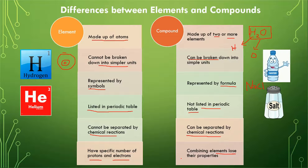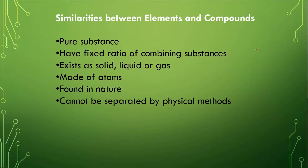In the case of compounds, the combining elements lose their individual chemical properties. For example, hydrogen and oxygen are both gases, but when combined together they form a liquid — which is water.